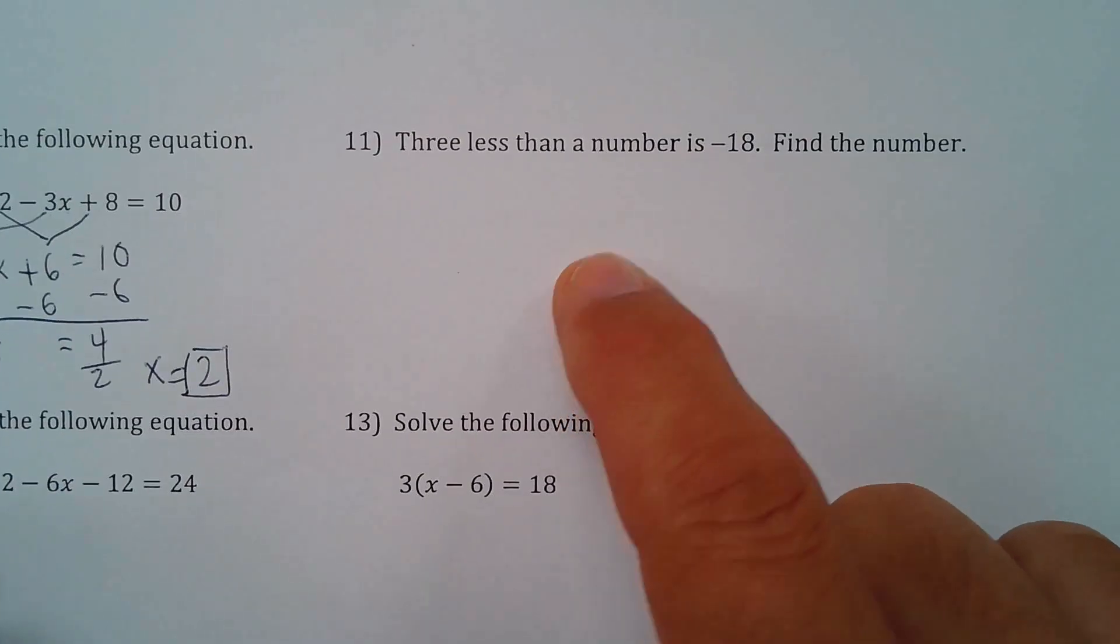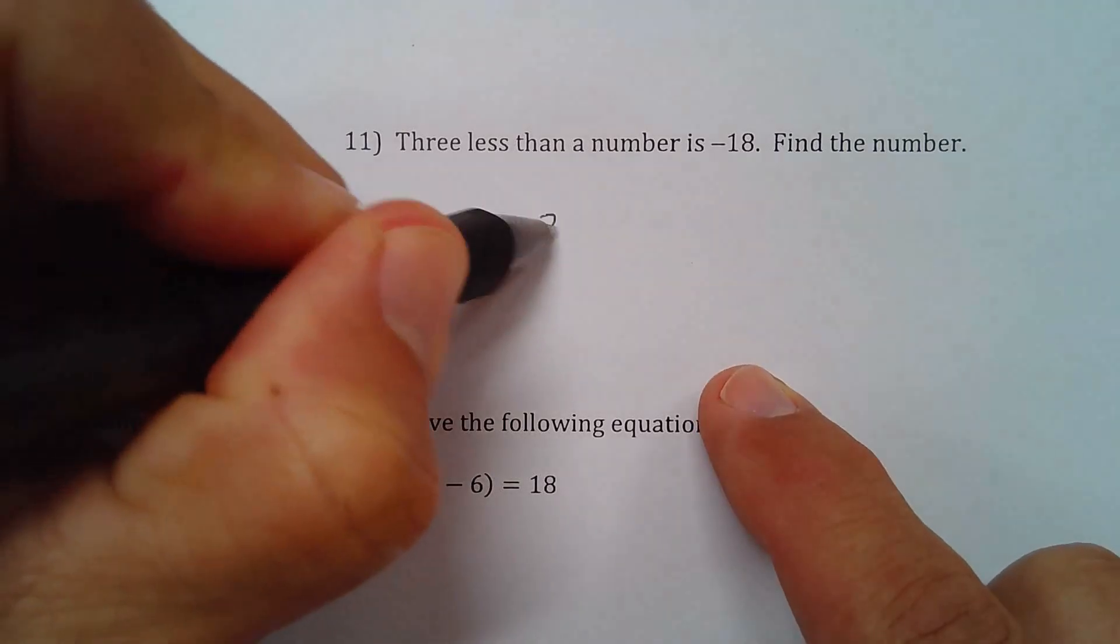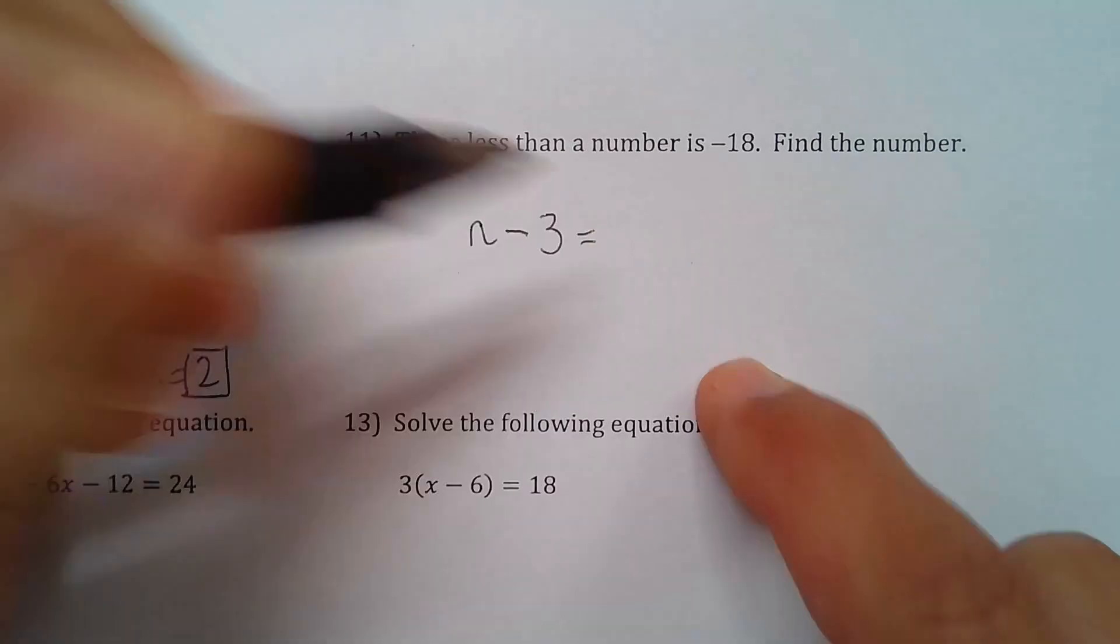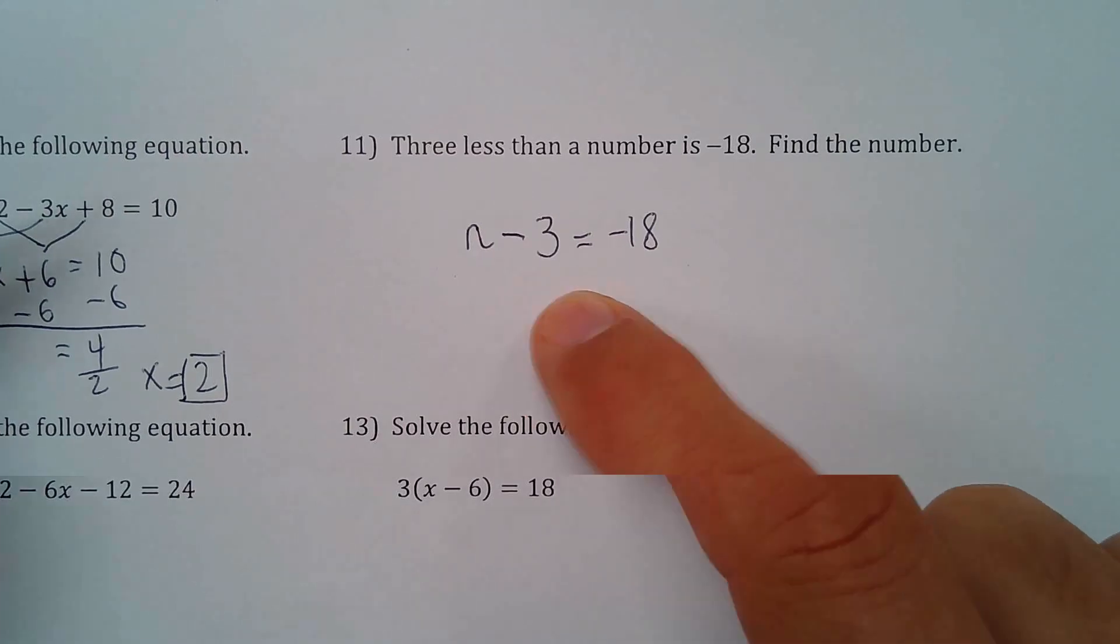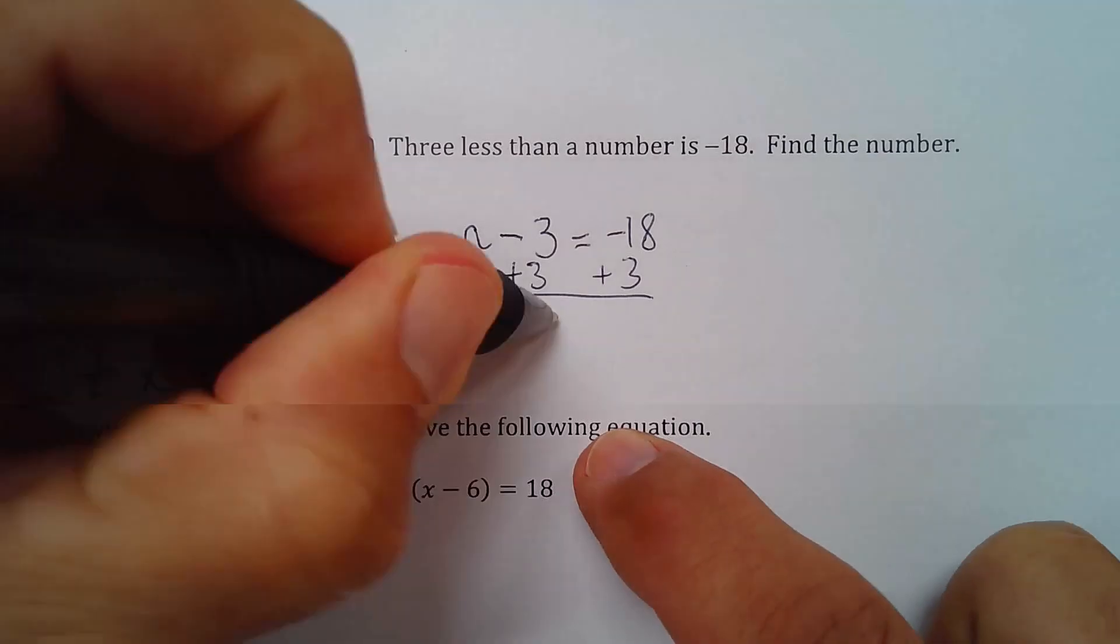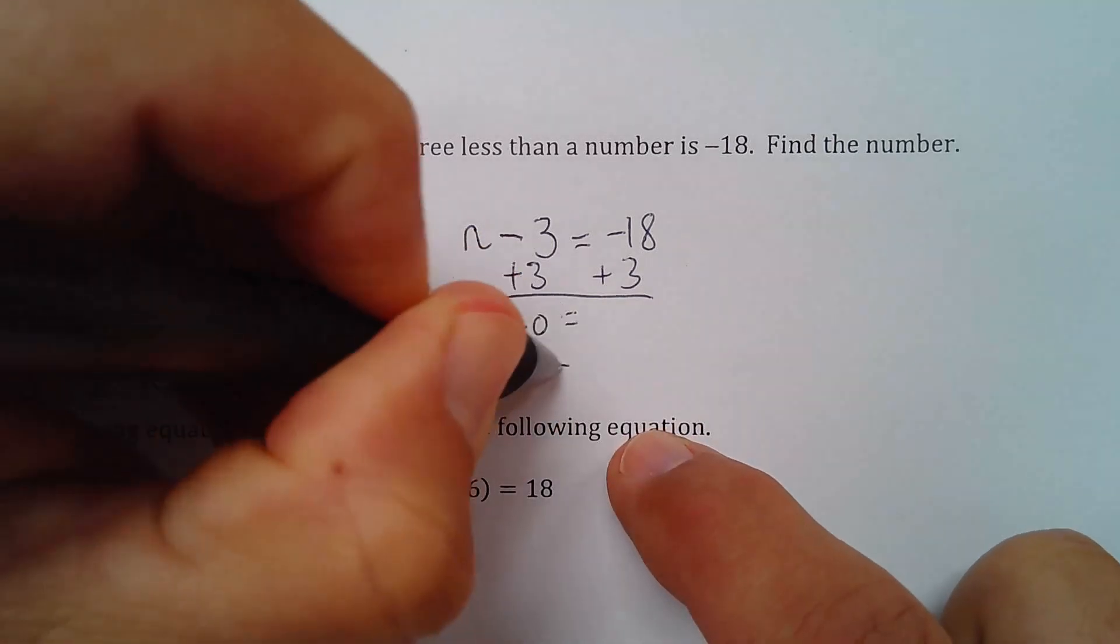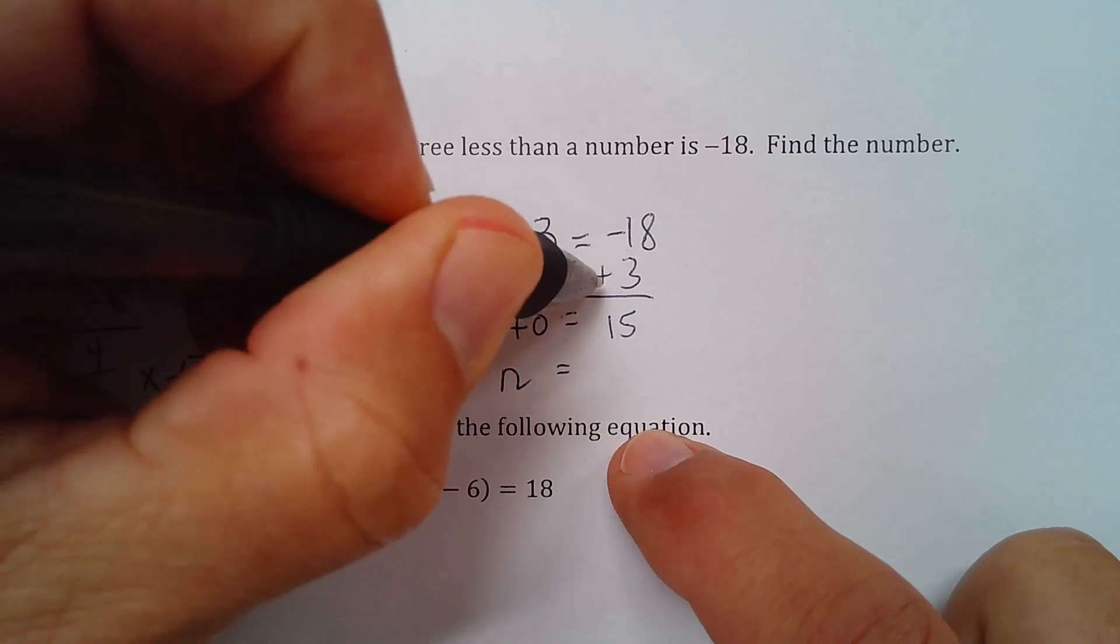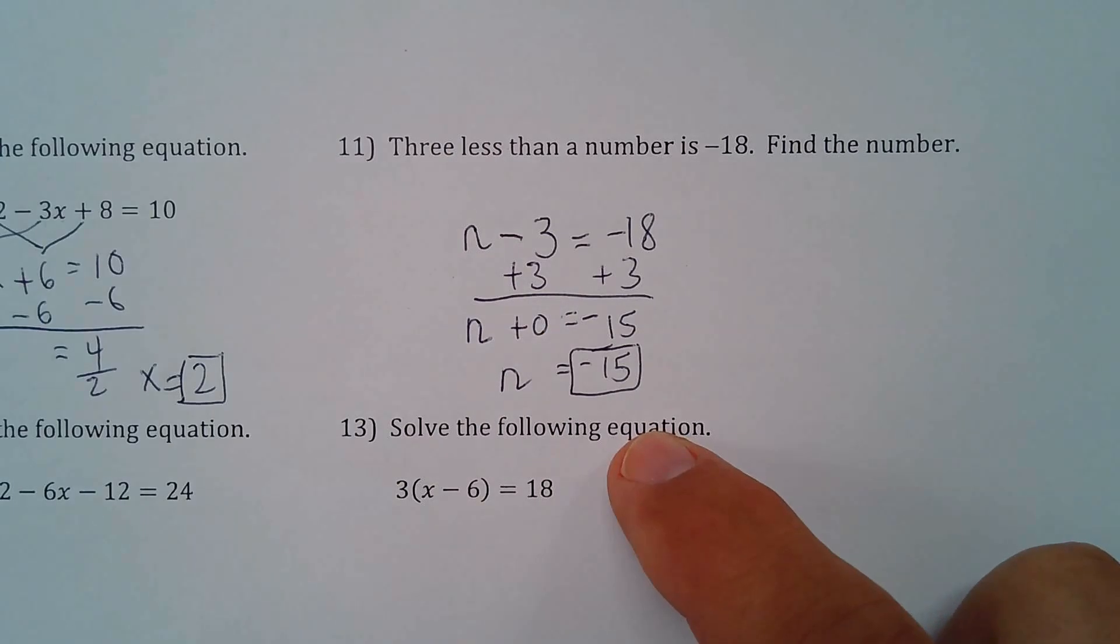Okay. Let's do this one. 3 less than a number is negative 18. Find that number. 3 less than a number. So you write like this. 3 less than some number. I guess I'll call it n. n equals negative 18. And then I just add 3 to both sides. And I get n plus 0. Because we're trying to do that. And n plus 0 is just n. Equals, you have to subtract these. Because they're different signs. And there's more negatives than positives. So it's negative 15.